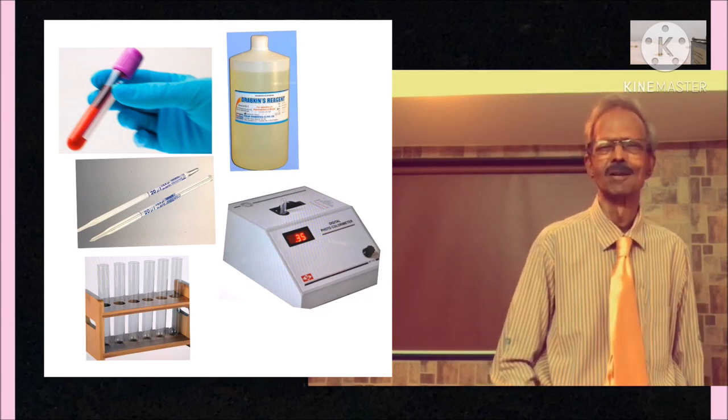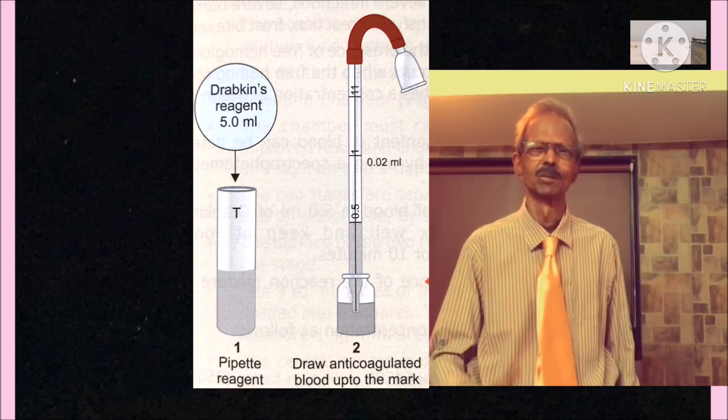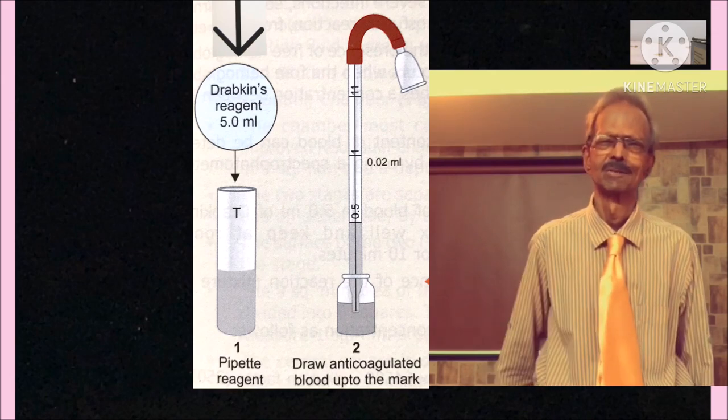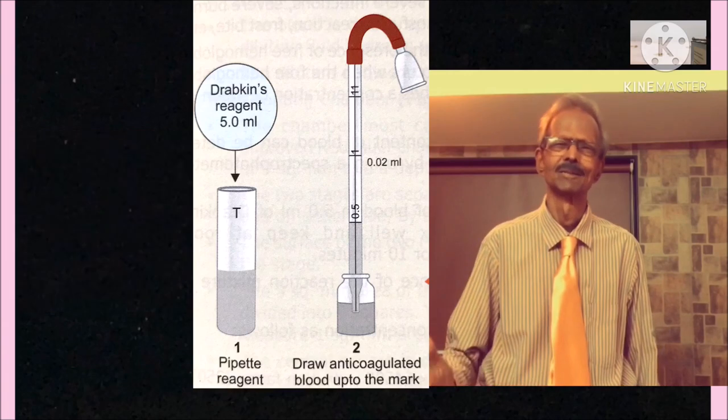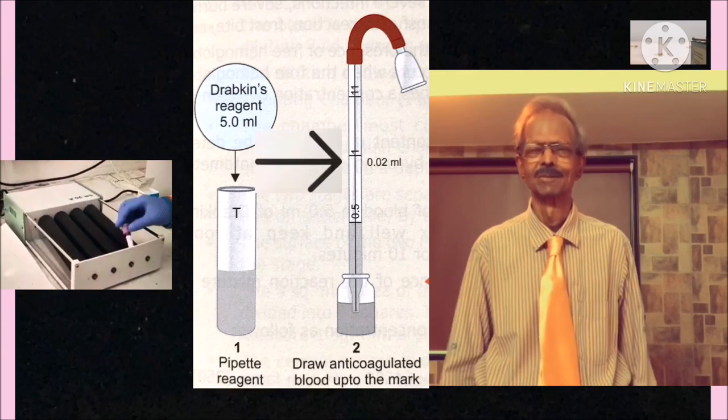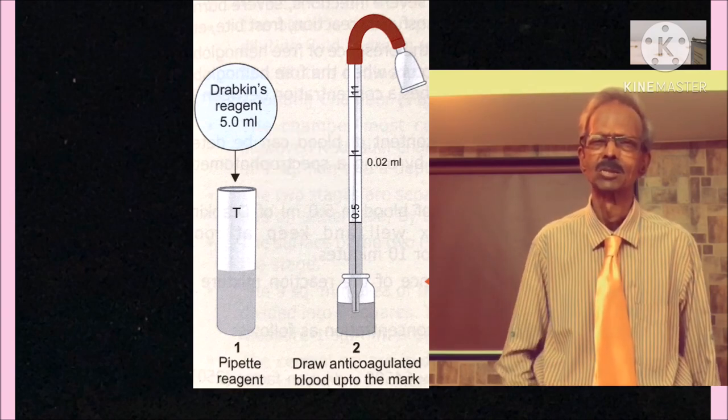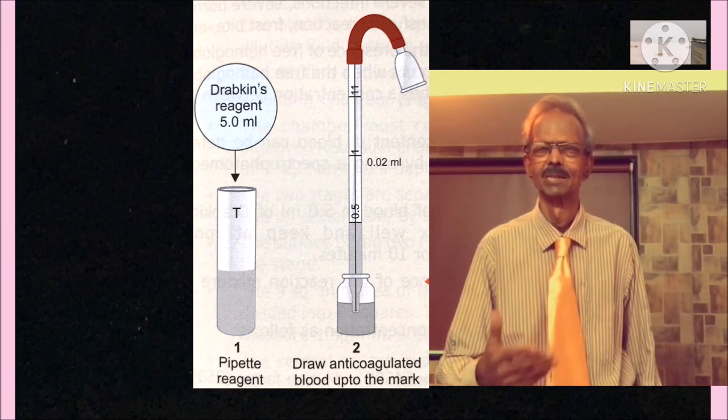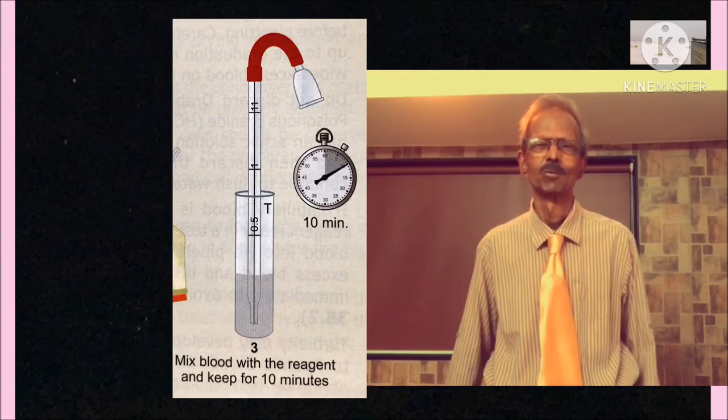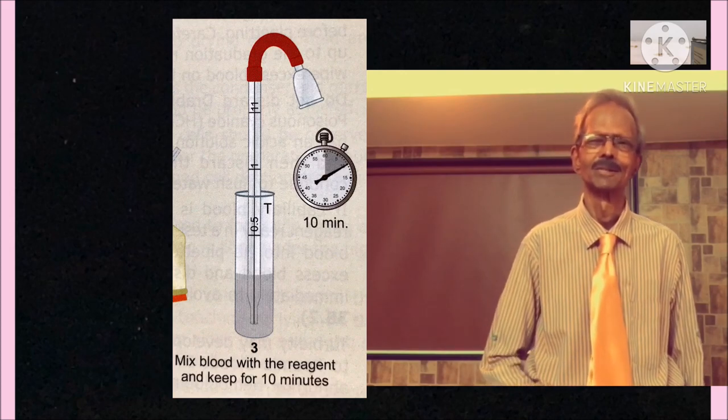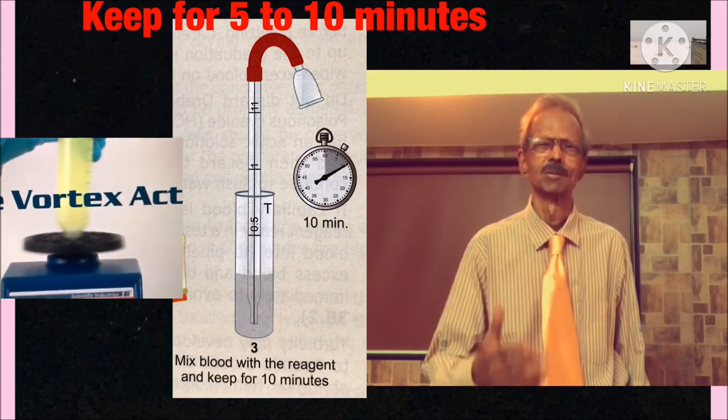Procedure: As shown in the figure, in a medium size test tube, add 5 ml of Drabkin's reagent. Mix blood carefully and from this, draw 0.02 ml of blood in hemoglobin pipette and wipe excess blood on the sides of the pipette carefully. Add this blood in Drabkin's reagent, rinse HB pipette and mix the mixture very well and keep at room temperature for 5 minutes.